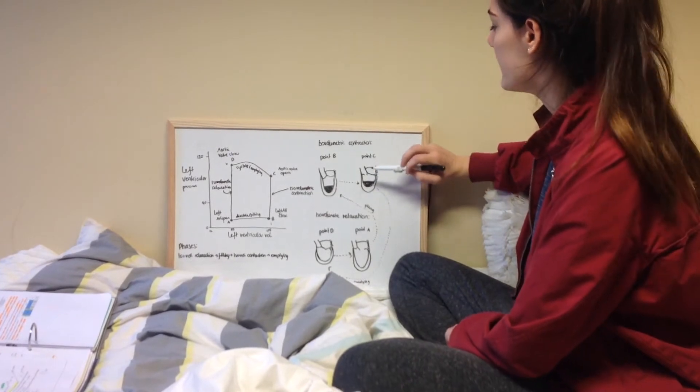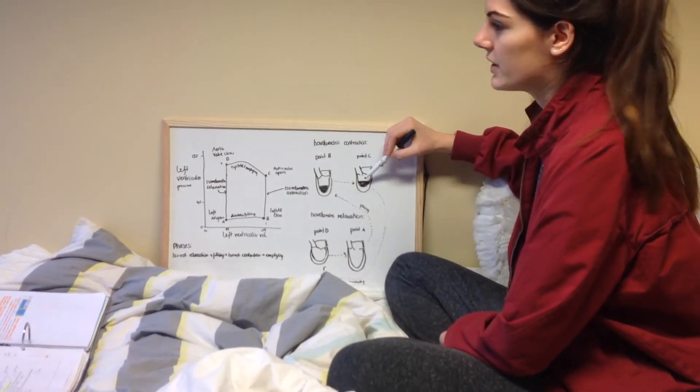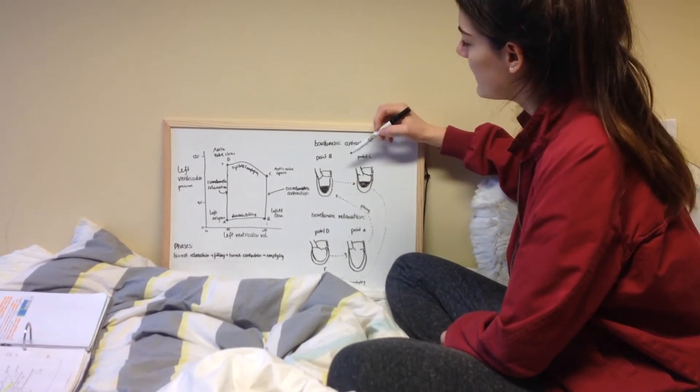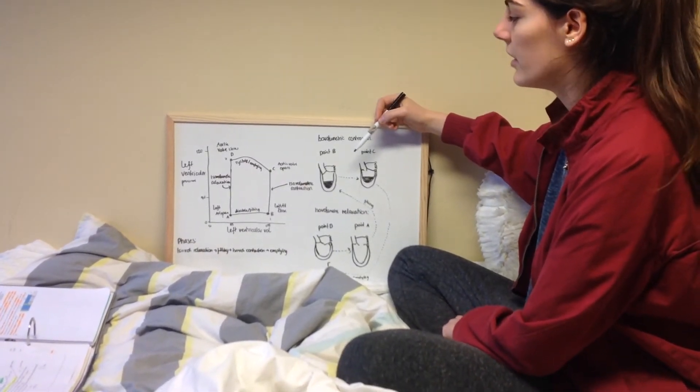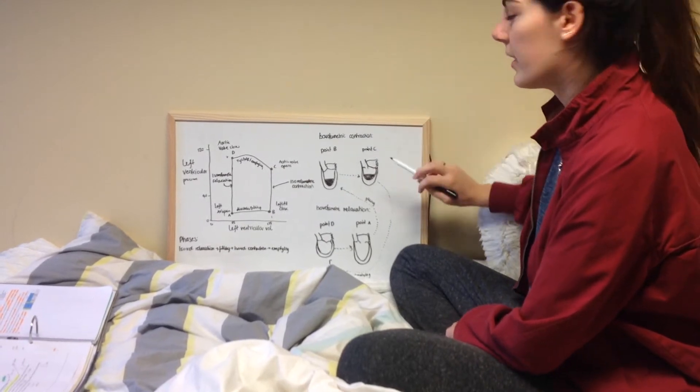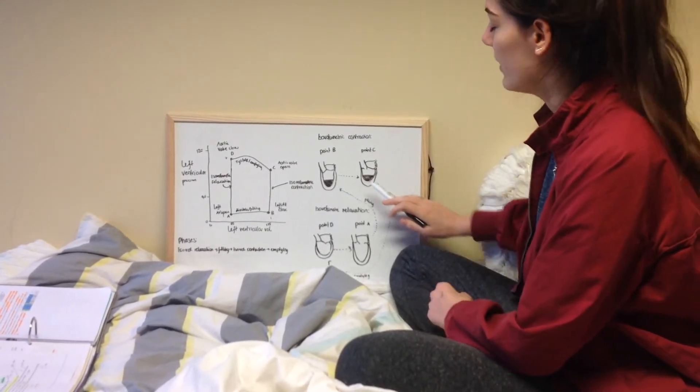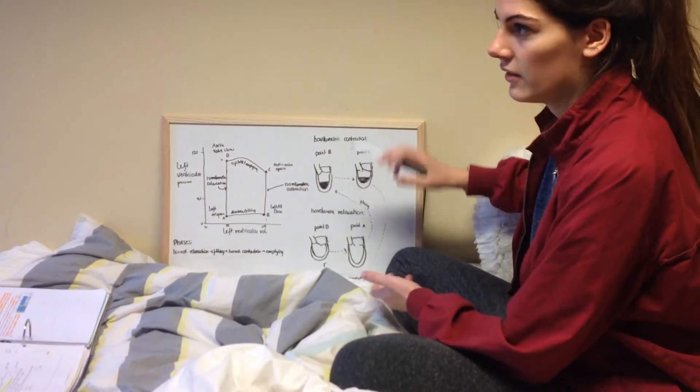Because of this pressure increase, the ventricular pressure exceeds the aortic pressure, so the aortic valve opens. That is when isovolumetric contraction stops, because the blood will leave, so the volume decreases.